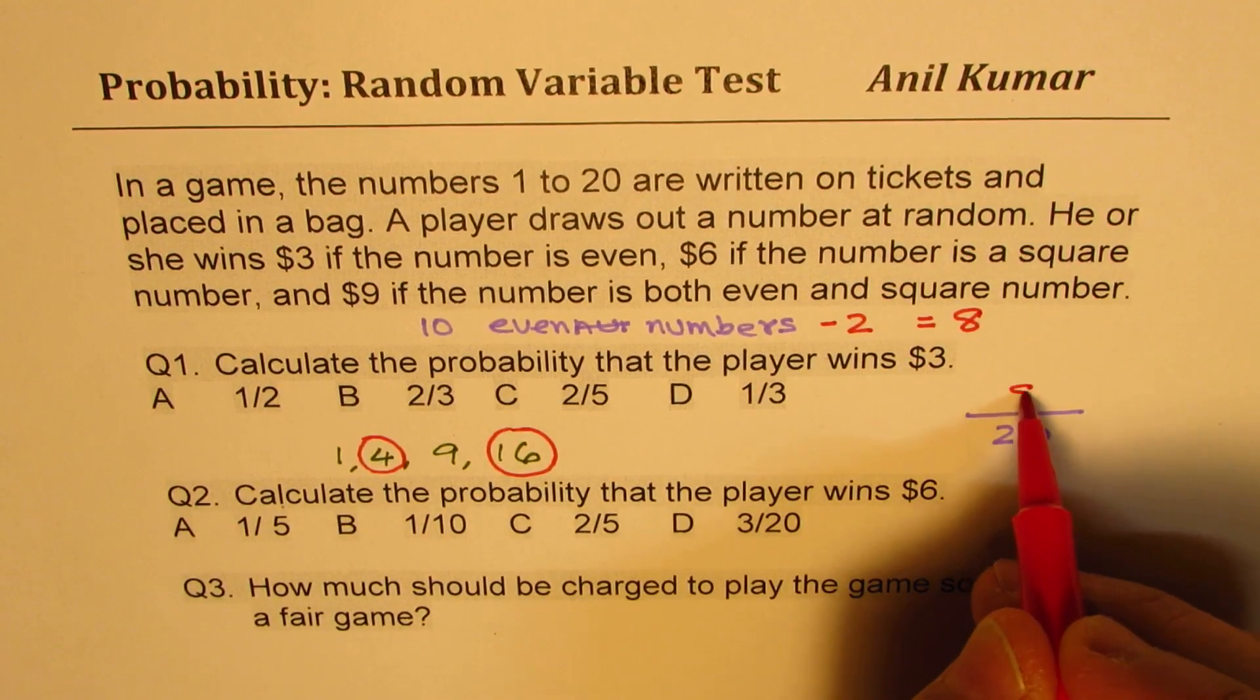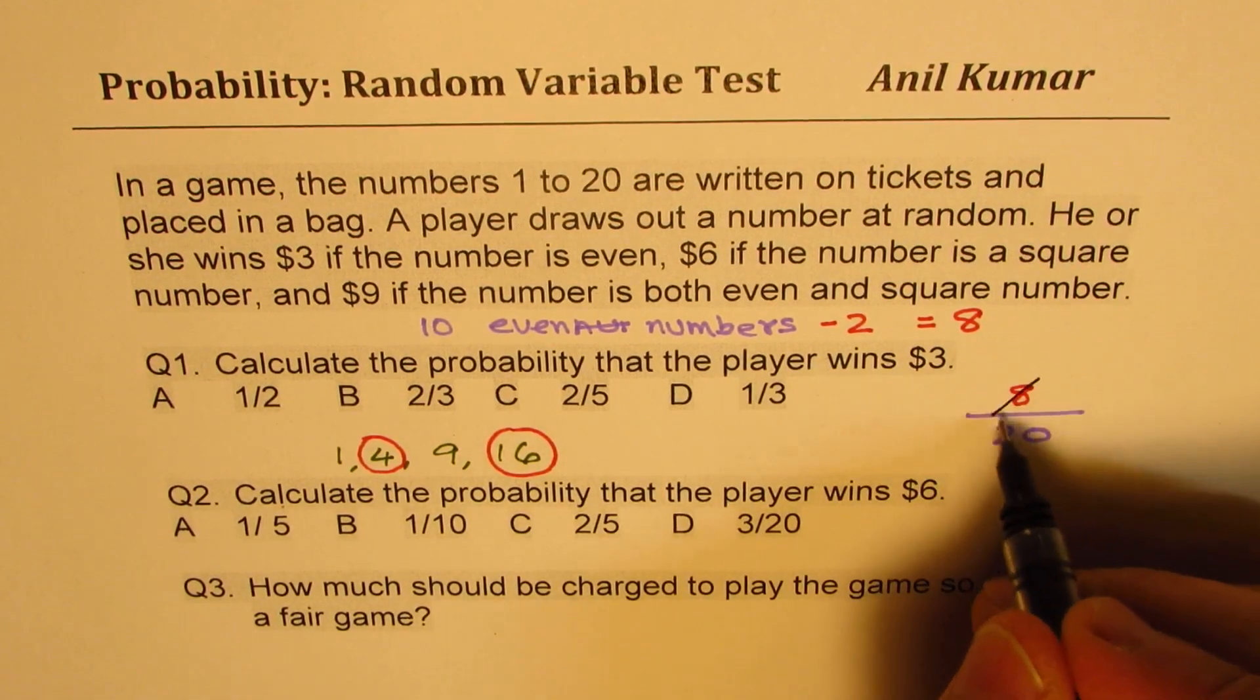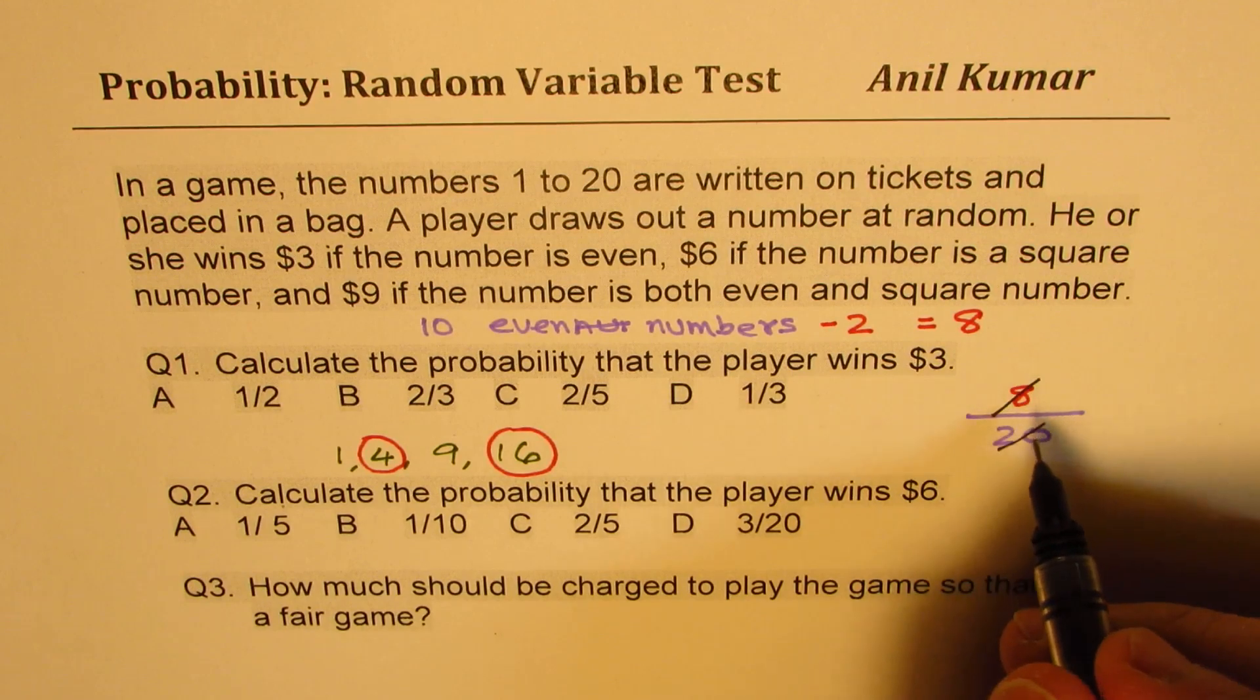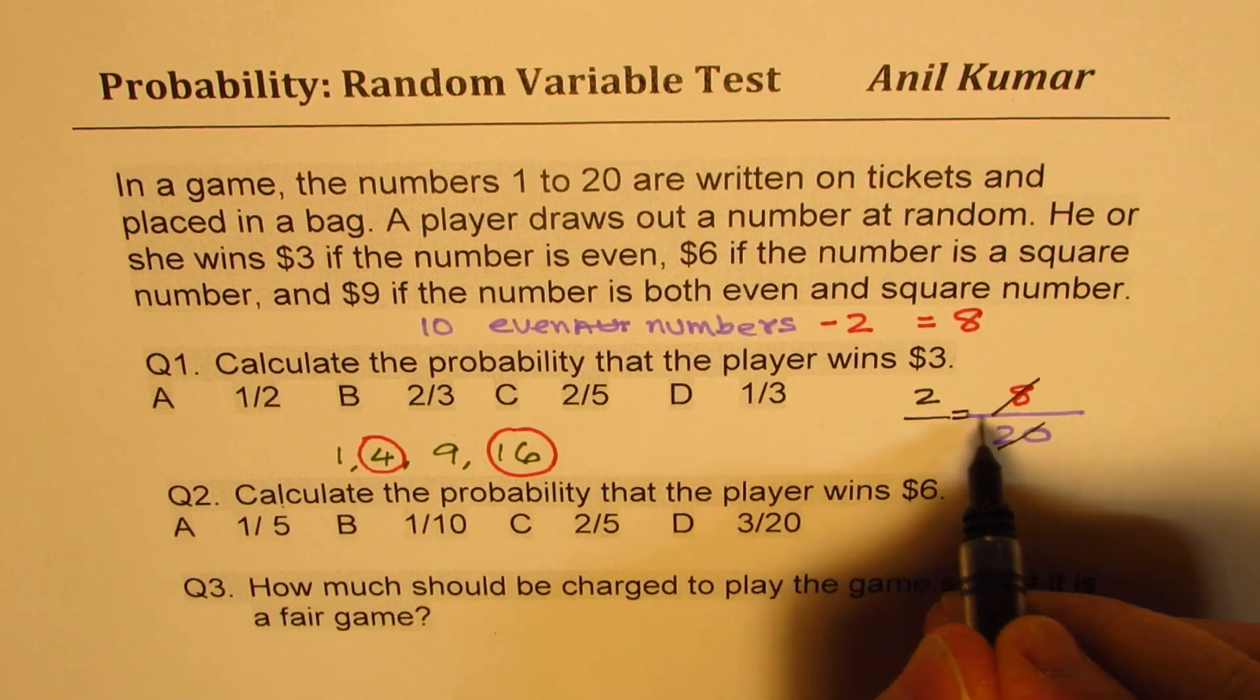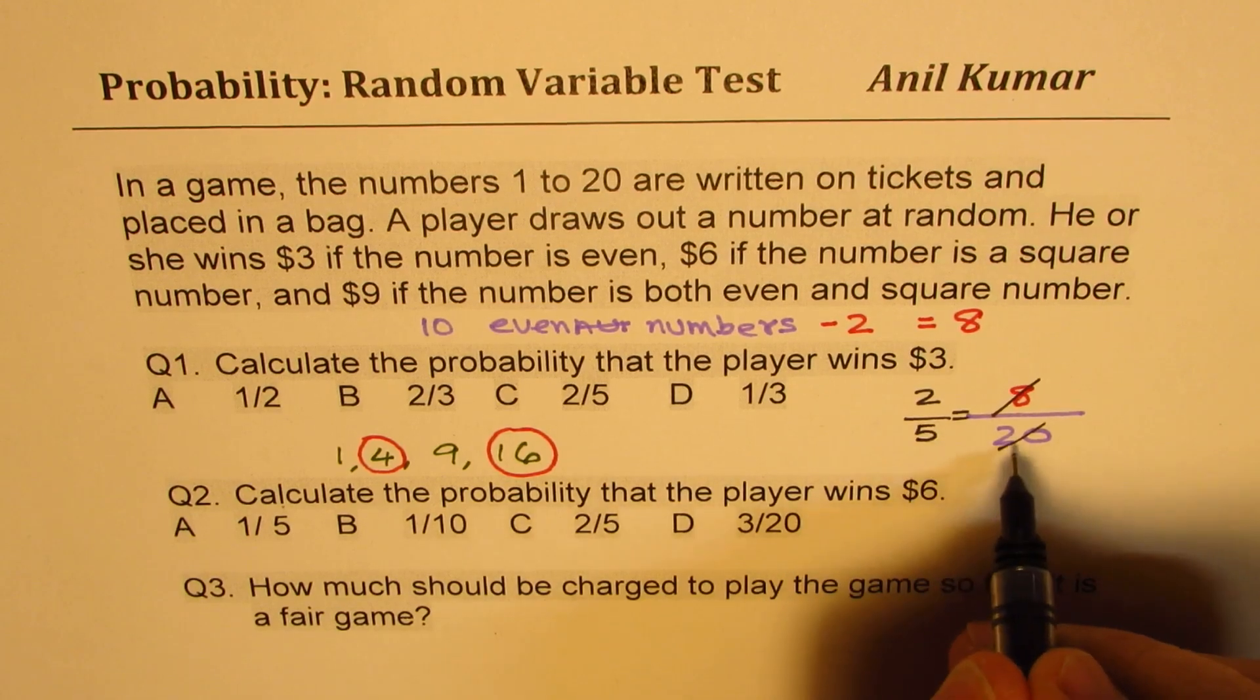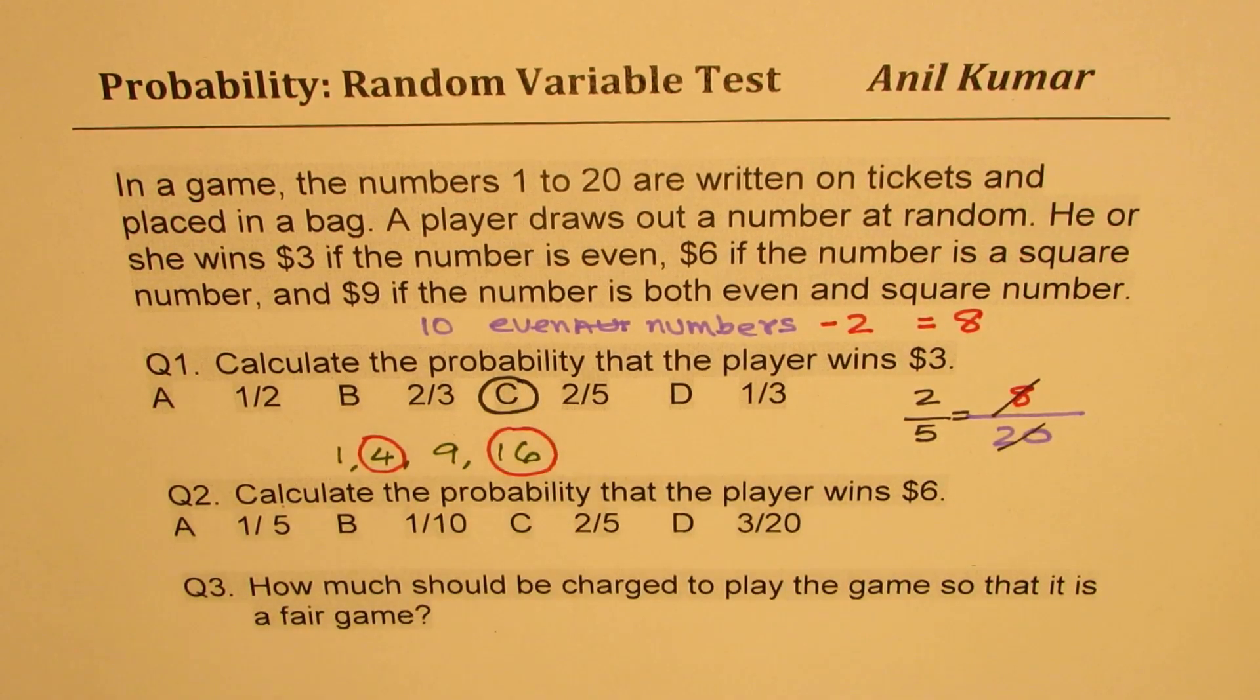So that means it has to be 8 out of 20 and not 10 out of 20. Sometimes you can do a mistake. So remember that part. Now let's simplify this. We can divide by 4. So 4 times 2 is 8 and 4 times 5 is 20. So we get option C as the right option, 2/5. Is that clear to you?